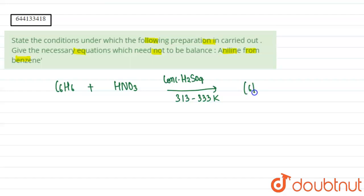we will get nitro benzene which is C6H5NO2 plus we will get one mole of water.